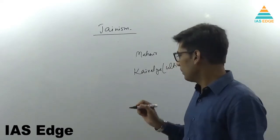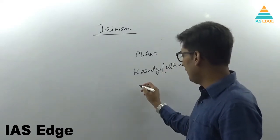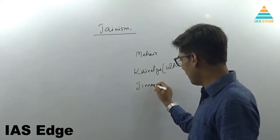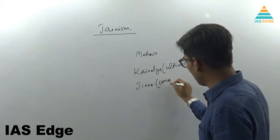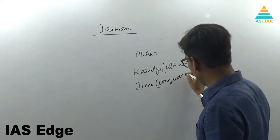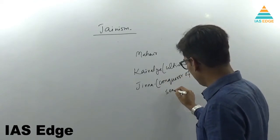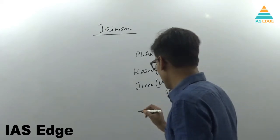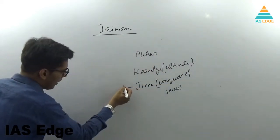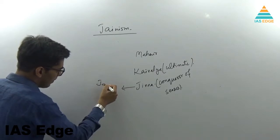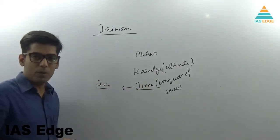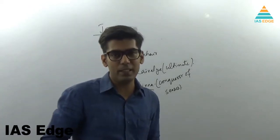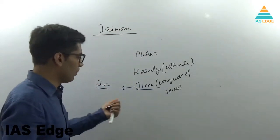So when he got Kaivalya, he became Jina. Jina means conqueror of senses. The word Jain is derived from Jina. The one who has conquered his senses is Jina, and this word Jain comes from Jina.